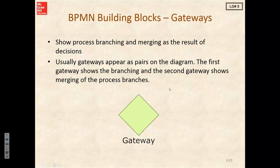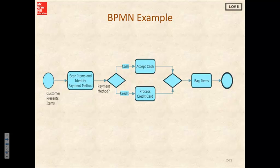Let's put all these pieces together with an example — a normal checkout line at your local grocery store. We've got our single-line circle showing we're starting the process. The customer presents an item to the checkout clerk, and we follow the sequence flow to our rounded rectangle where the clerk scans items and identifies the payment method. We reach a gateway for cash or credit. Going along the cash path, the clerk accepts the cash, closes the gateway back to the normal process, bags the items, and then we end the process with a bolded-line circle.